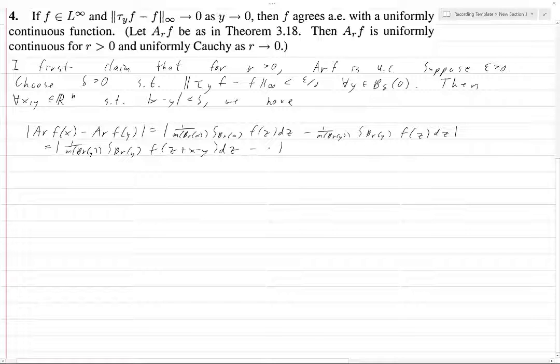Now what we want to do is we can combine these two integrals because these are both integrals over B_r(y). And we're going to do that and at the same time bring the absolute values inside. So the factor of m B_r(y) is going to be factored out and that's positive, so that will just come out of the absolute value fine.